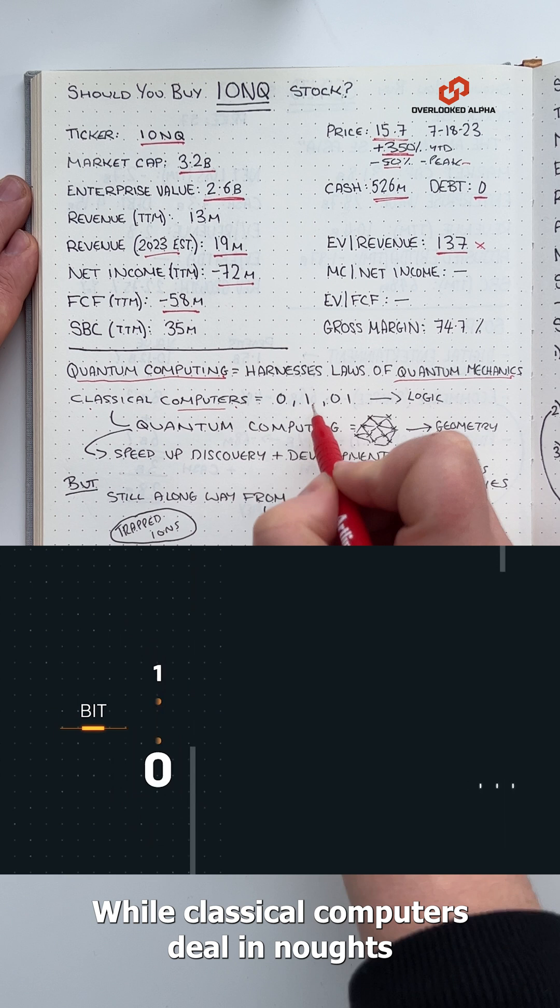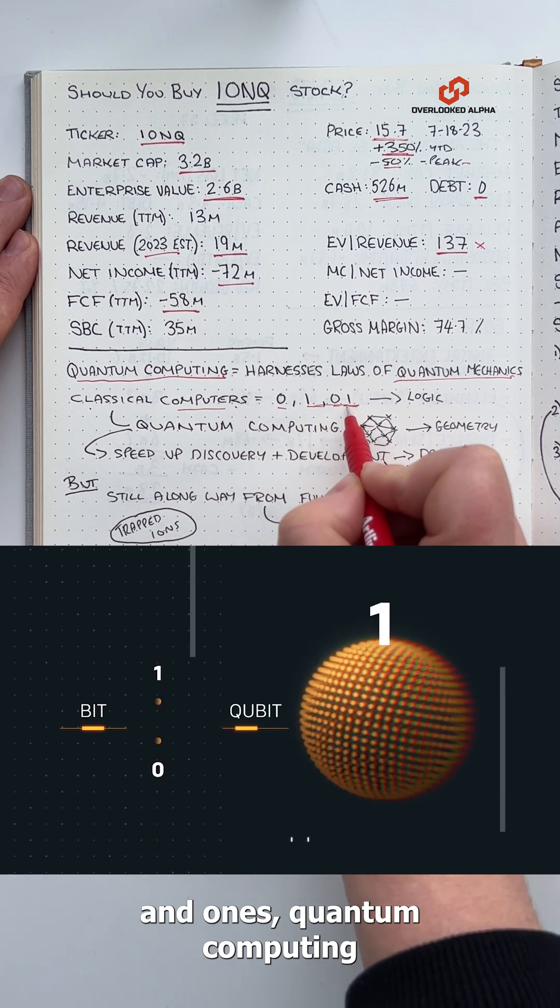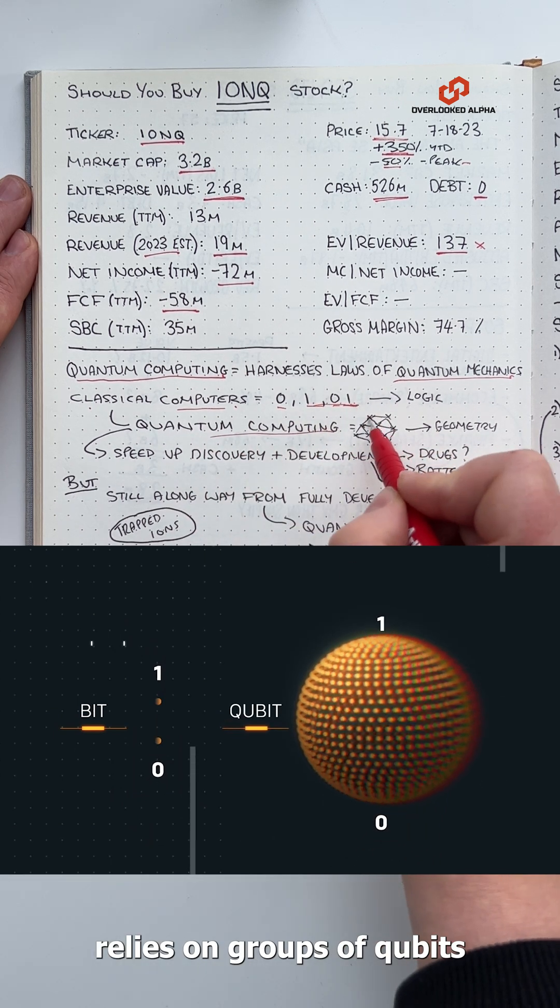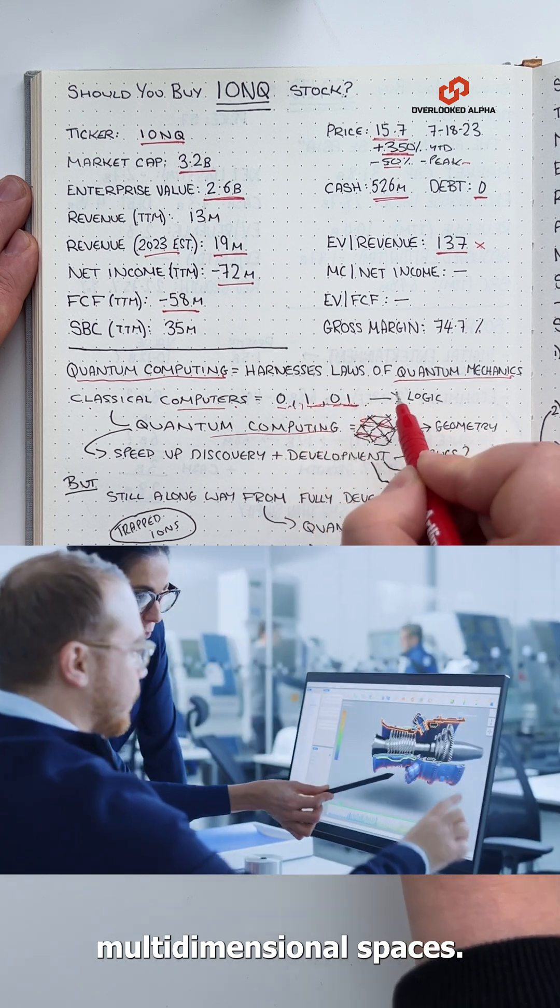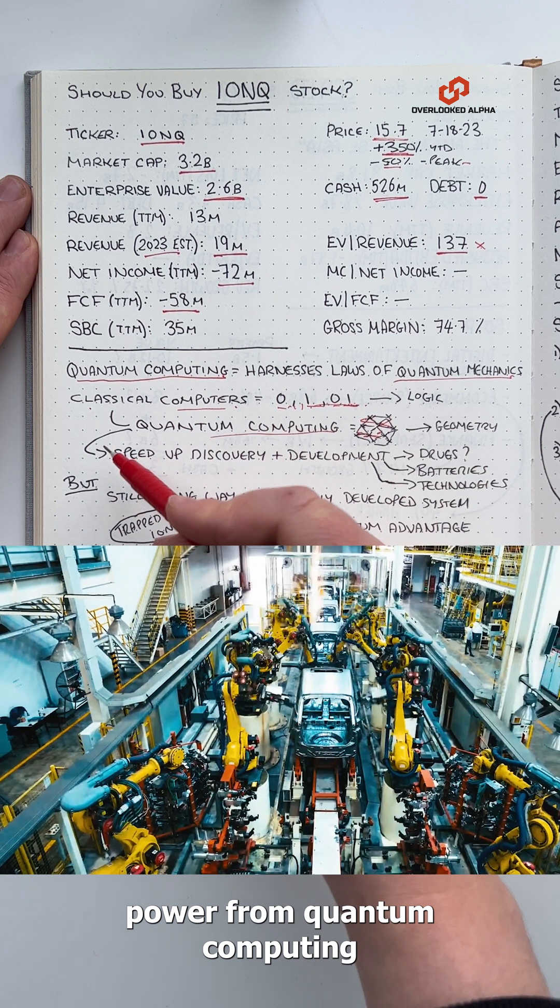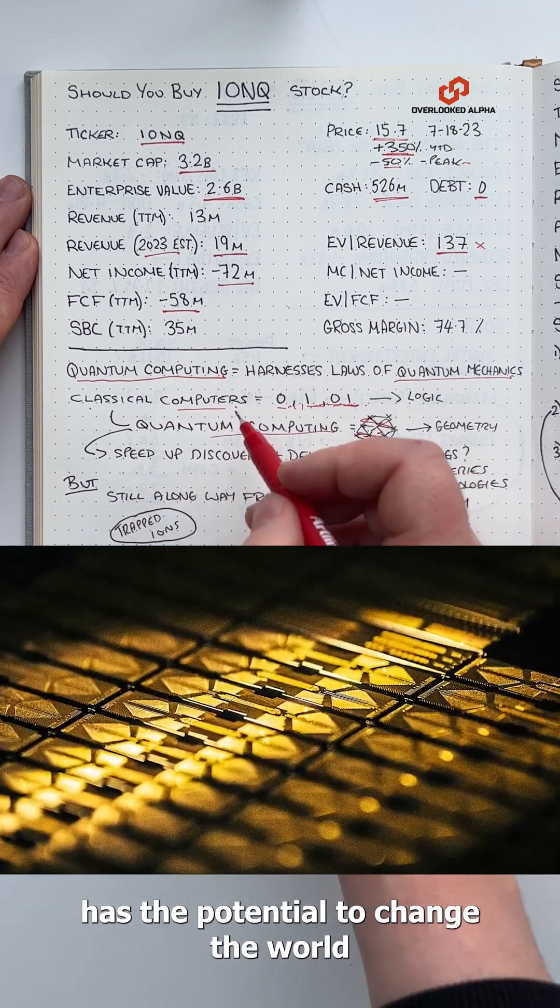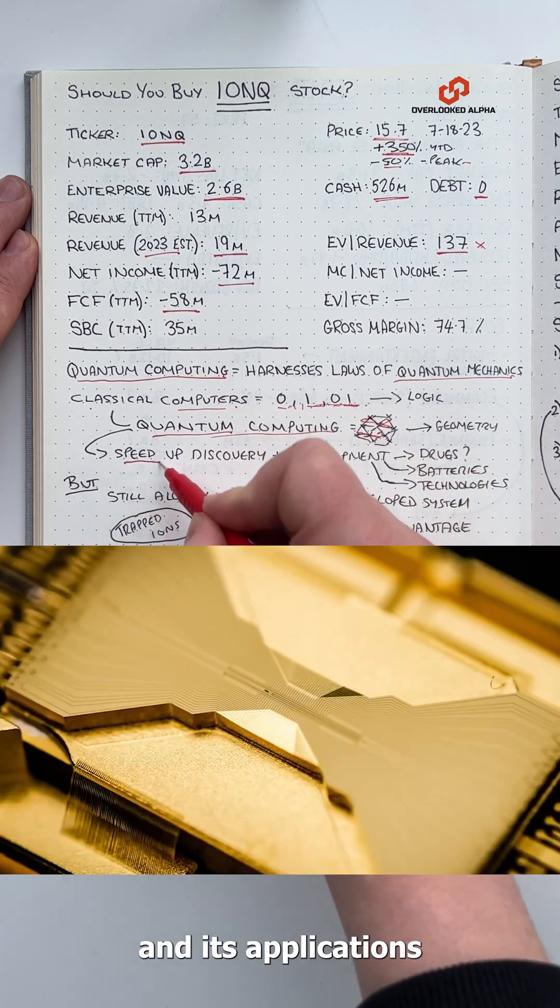While classical computers deal in noughts and ones, quantum computing relies on groups of qubits that create more complex, multidimensional spaces. The significant processing power from quantum computing has the potential to change the world